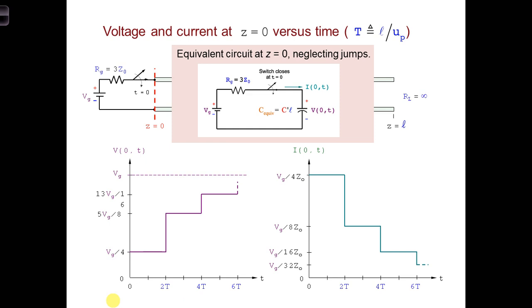As a result, here is an equivalent circuit for the open-circuited transmission line at Z equals zero, where the load is an open circuit, neglecting the jumps due to the wave reflections within the transmission line.